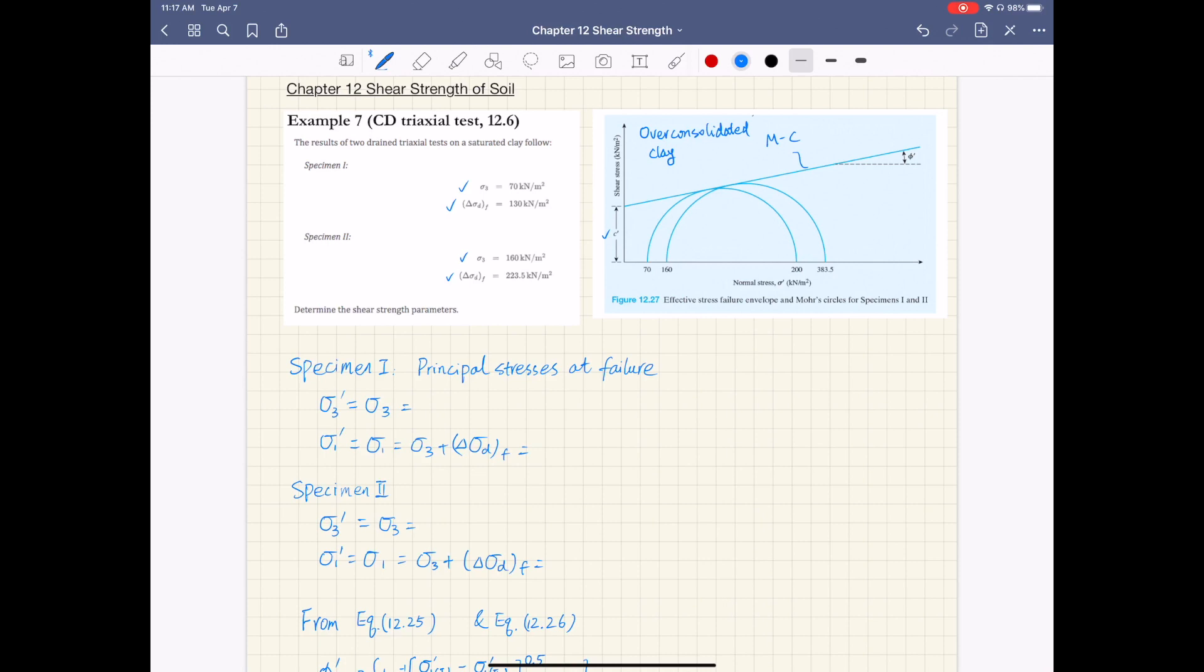So you have two shear strength parameters to determine, C' and phi'. So first, to determine these two shear strength parameters, we need two equations, basically.